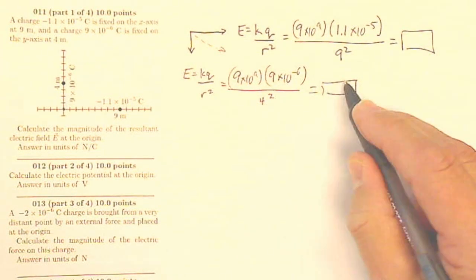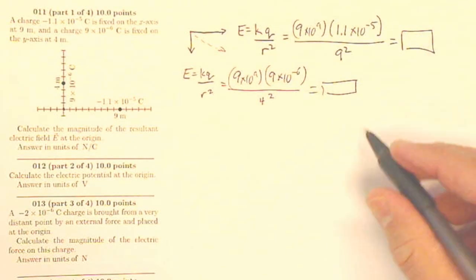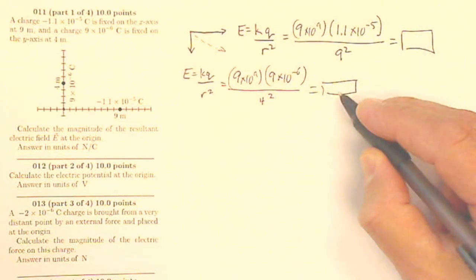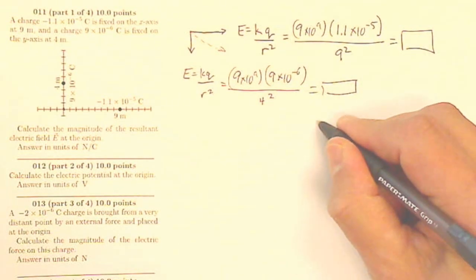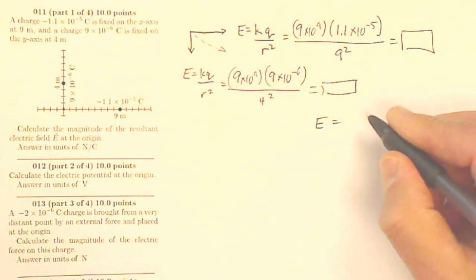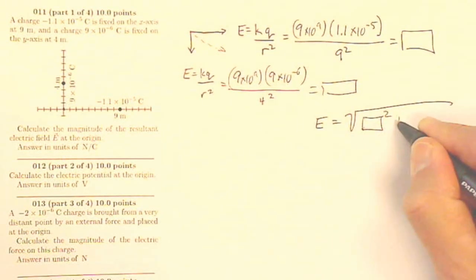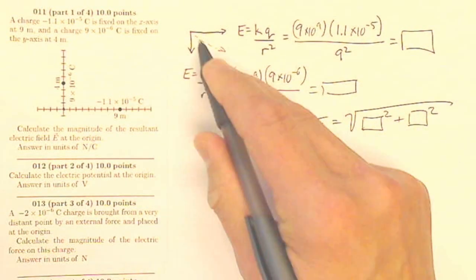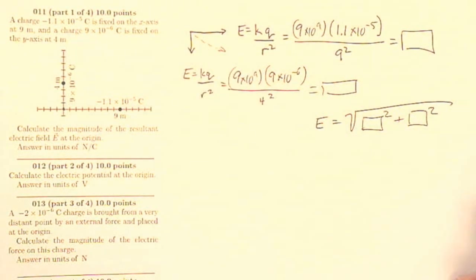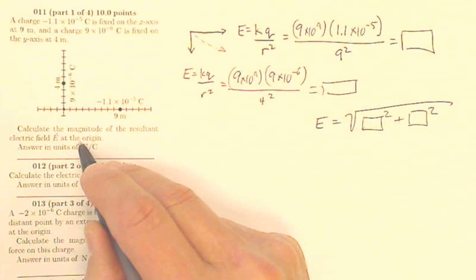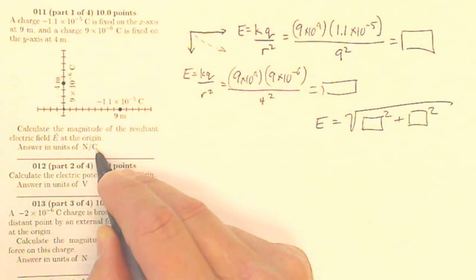So that's going to be in the Y direction, that's going to be the X direction. So now I can do A squared plus B squared equals C squared. So my resulting electric field is going to be the square root of the first one squared plus the second one squared, because I'm looking for that hypotenuse. So that is the magnitude of the resulting electric field at the origin in newtons per coulomb.